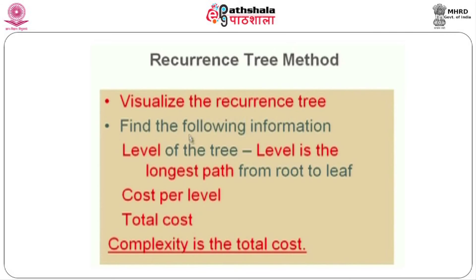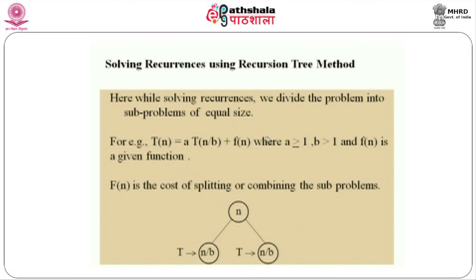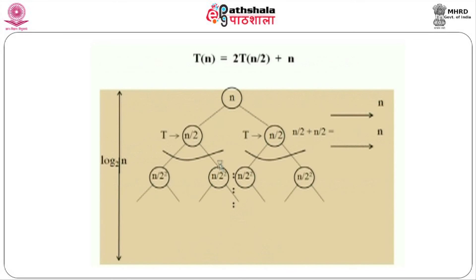The third method is called the recurrence tree method. The recurrence tree method is different from the earlier methods — we are trying to visualize everything as a tree structure. Once we have the tree, we get level cost information and try to find the total cost. The whole complexity is expressed in terms of the total cost. Taking a non-linear recurrence equation T(n) = a·T(n/b) + f(n), the problem of size n is divided into a subproblems of instance size n/b.